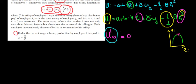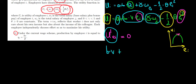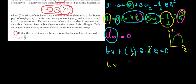Let's differentiate utility with respect to effort term by term. A is a constant so its derivative is zero. The term B times V times E differentiates to B times V. Gamma times the other person's wage is also a constant, so its derivative is zero. Then minus one over two times theta times E squared differentiates to minus one over two times theta times two E. So we have B times V minus theta times E equals zero.